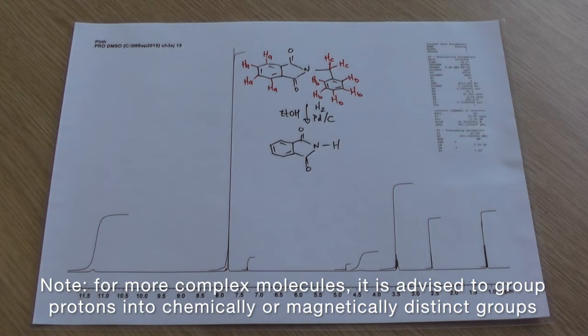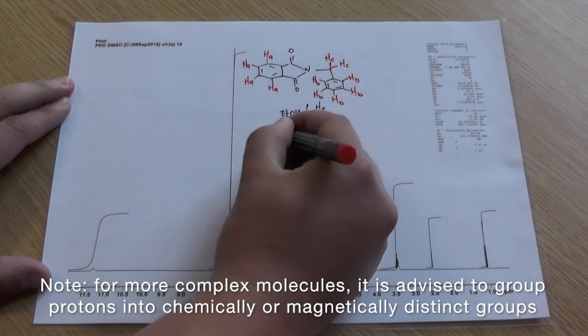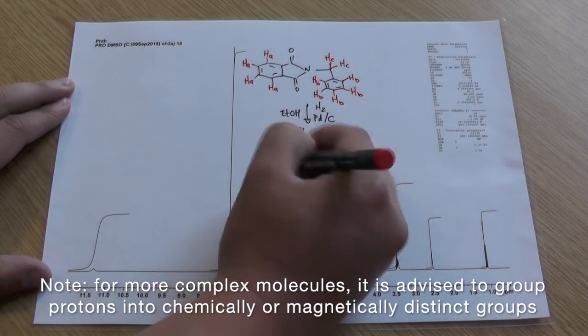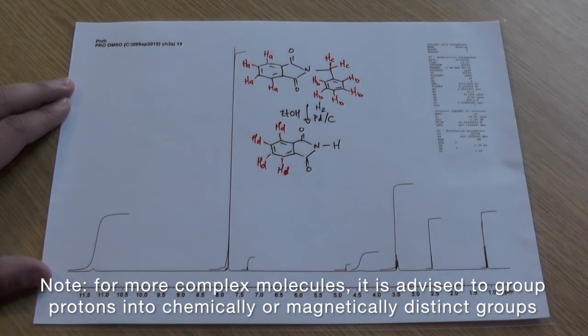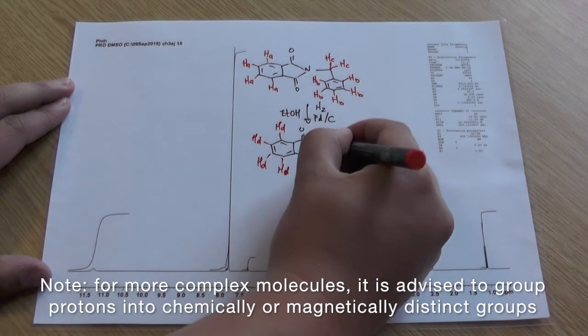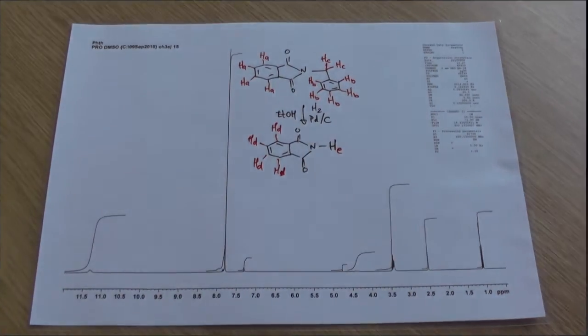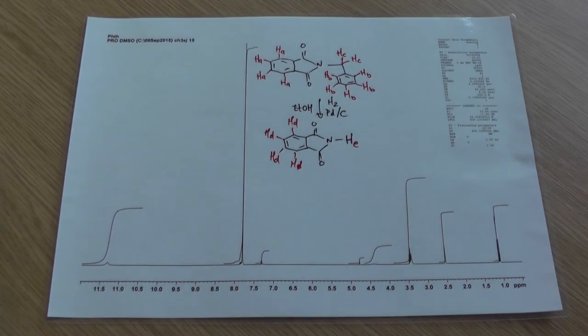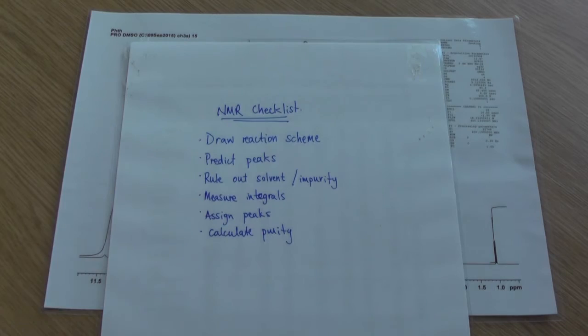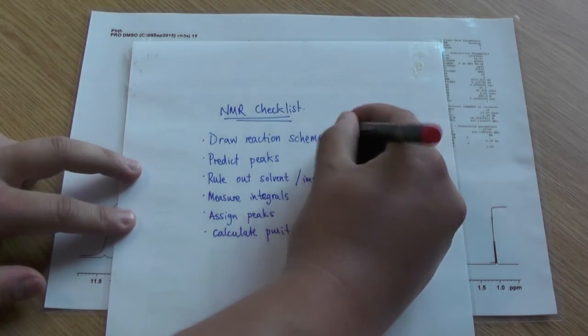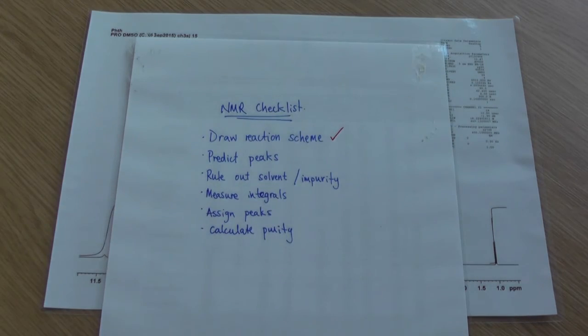And then in the product you've got your four aromatic protons and the hydrogen attached to the nitrogen of the ring. Looking back at our checklist, we've drawn the reaction scheme and we've predicted what peaks we might want to see. The next step is to rule out any solvent or impurity peaks.